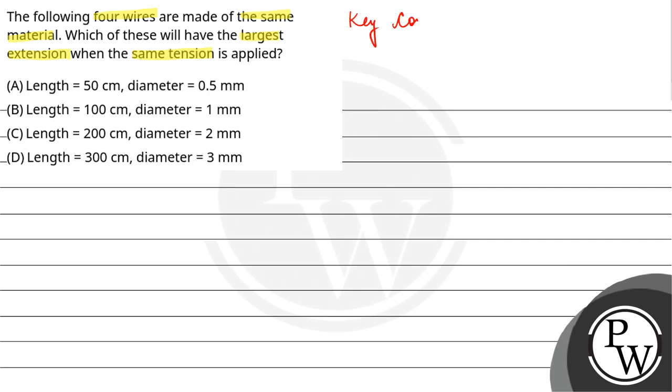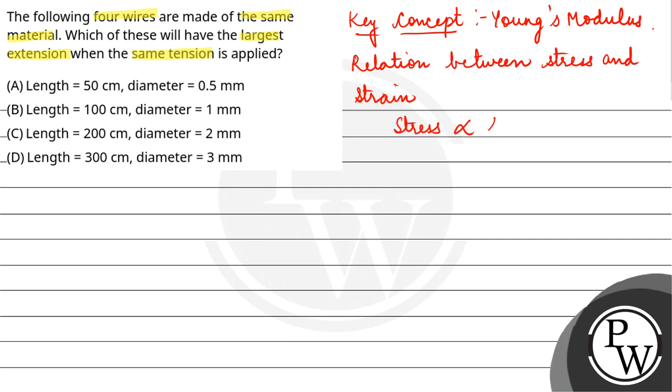So bachyo, here our key concept is Young's modulus. So Young's modulus describes the relation between stress and strain. So stress is directly proportional to strain, and if we go directly proportional to equal, so stress upon strain is equal to Young's modulus.